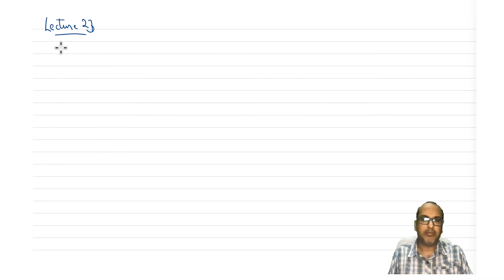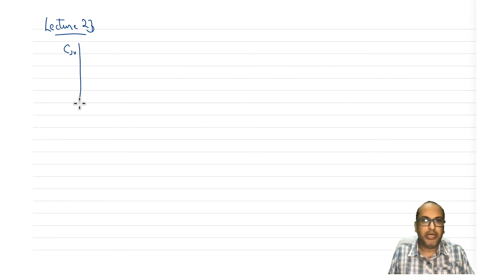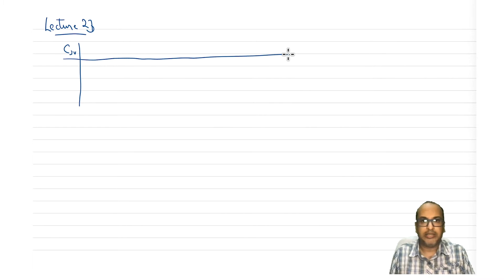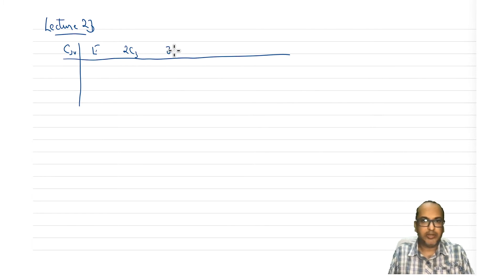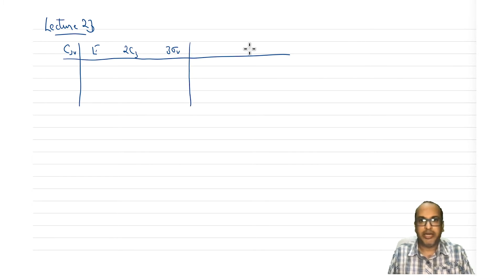So far we have been looking at actually a partial character table. Now let's again take the example of C3V because we now know all the elements of this character table, at least some of it. Let's see what are the different areas in this and what are the meaning of those areas. If you look at any textbook, what you will see is the character table is divided into certain areas.